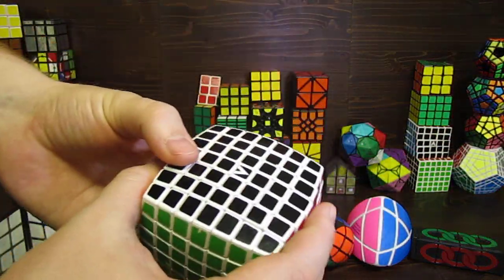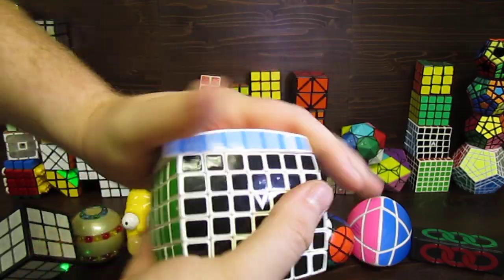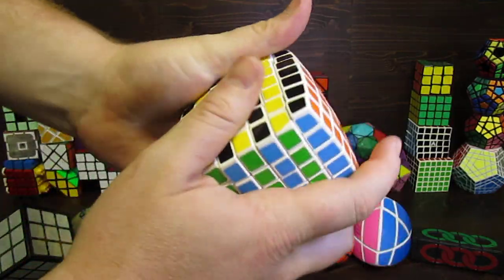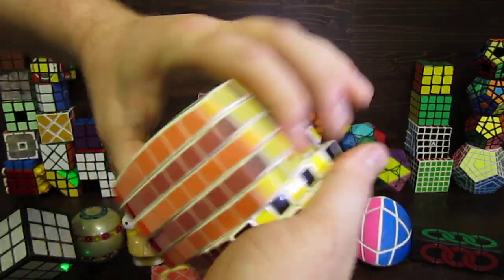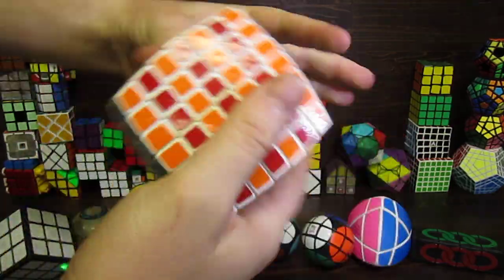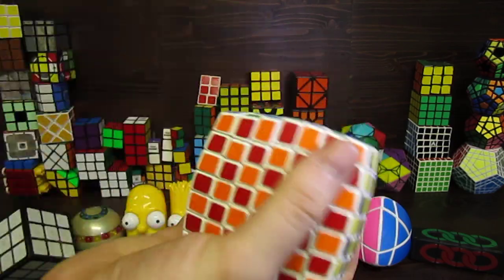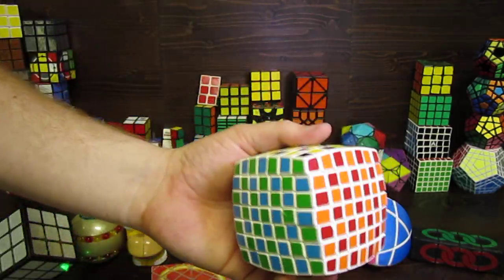The V-Cube 7 is the largest non-knock-off puzzle you can buy and it is really nice. They really made a good puzzle. It's very smooth. It turns great. It feels good in your hand. I really like the V-Cube 7.